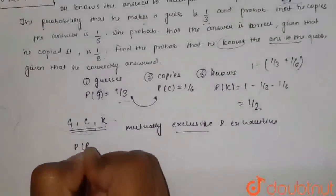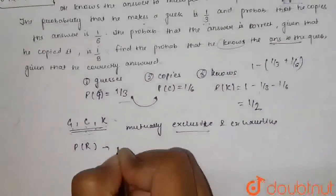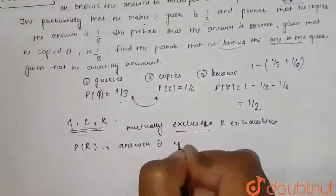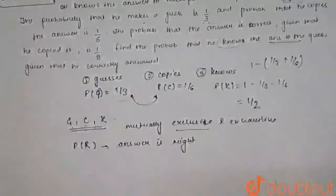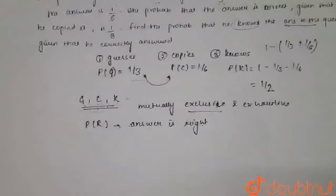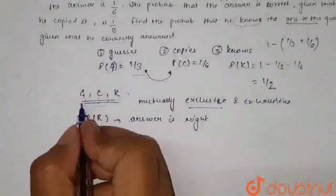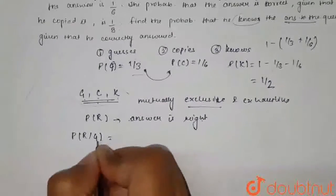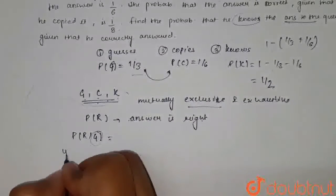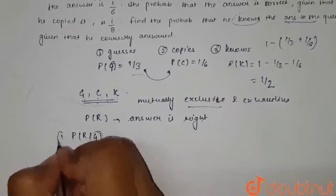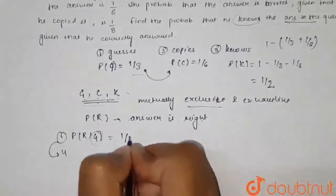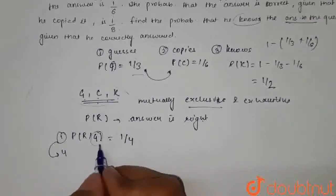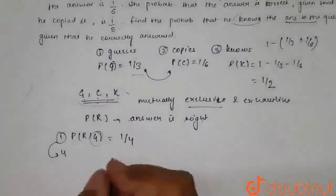Let P(R) be the event that the answer is right, or correct. The probability that the answer is correct when he guesses — P(R|G) — is one by four, because there are four options and he guesses only one. So the probability of getting the right answer after guessing is one by four.